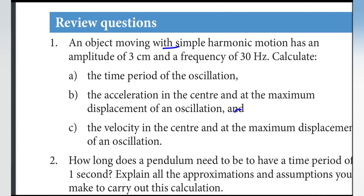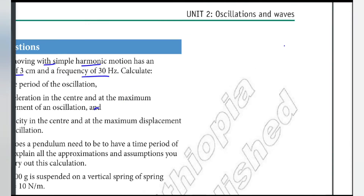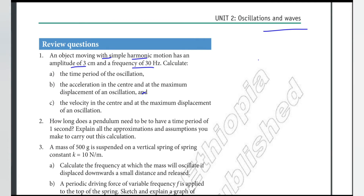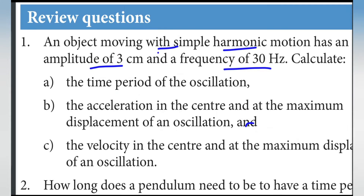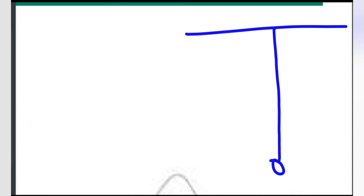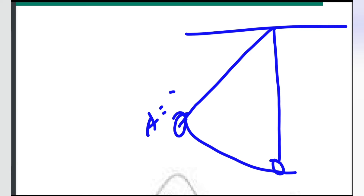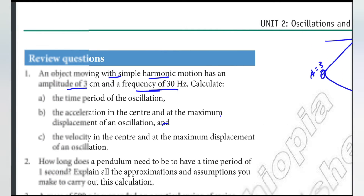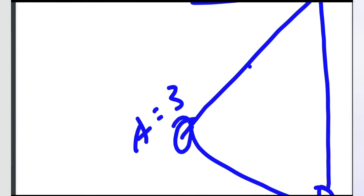An object moving with simple harmonic motion has an amplitude of 3 cm and a frequency of 30 Hz. The amplitude is 3 cm, which equals 0.03 m.